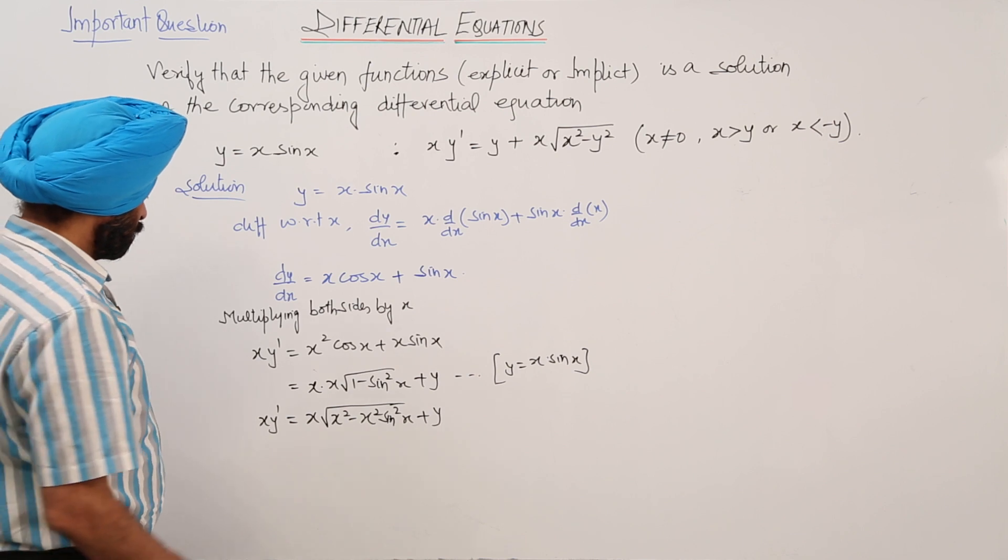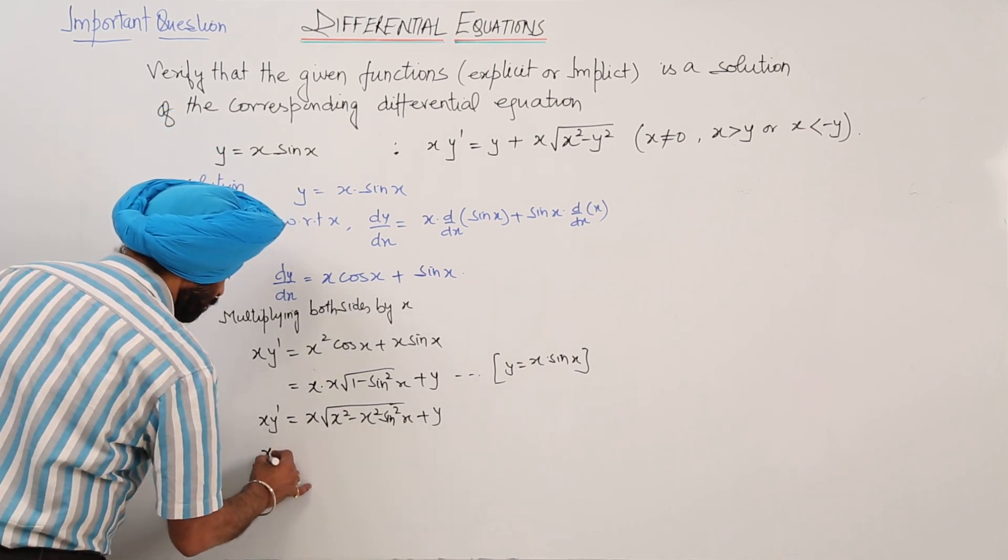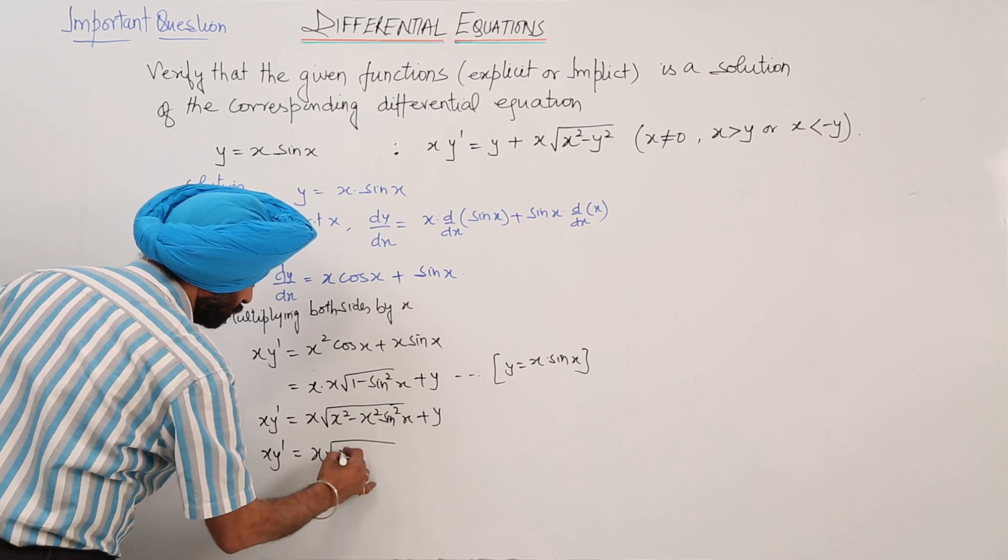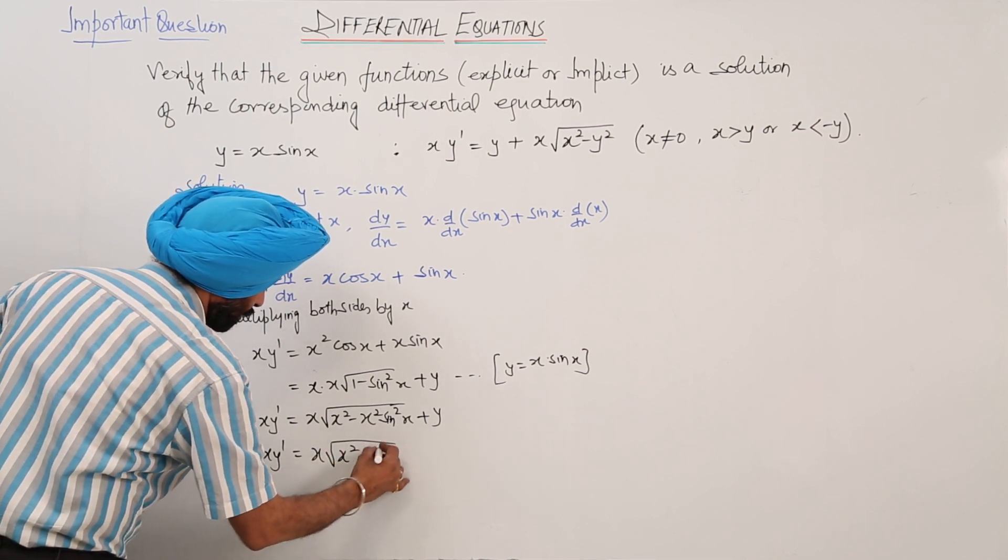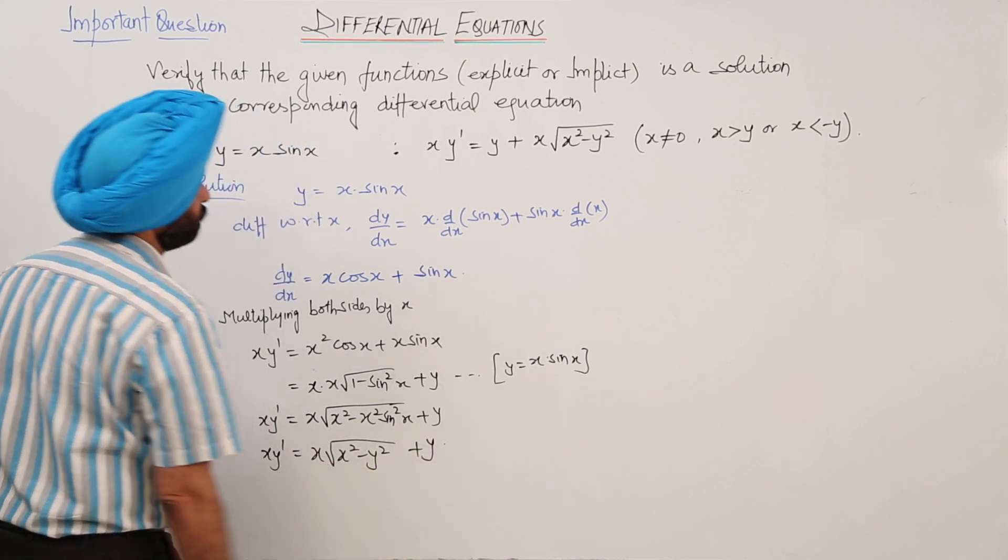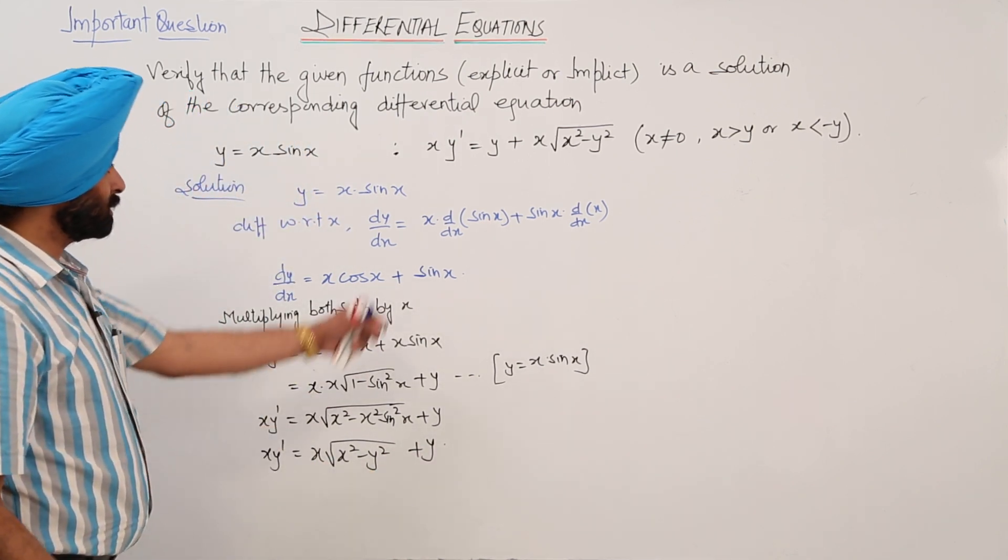This can be written as xy' equals x square root of x squared minus y squared plus y. So this is what we are getting.